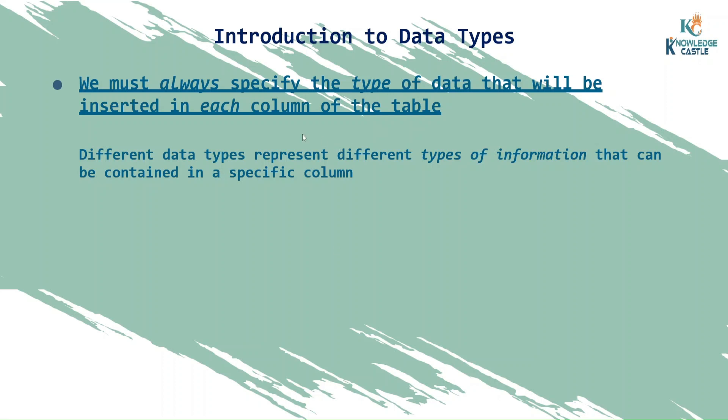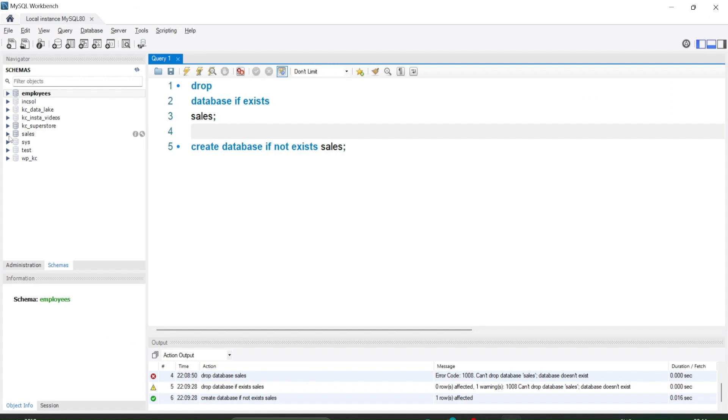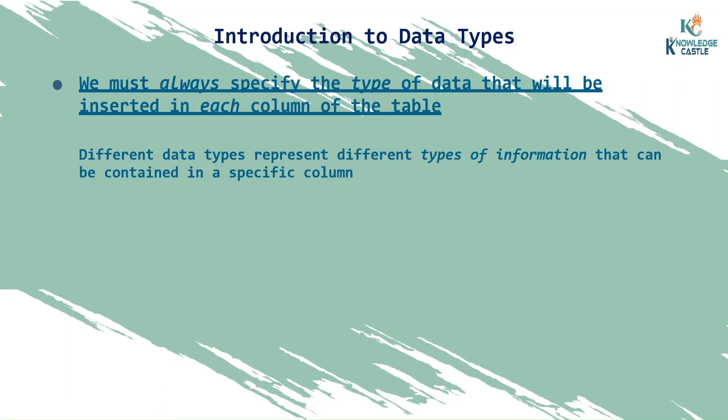If you remember, to create a table in the sales database, what is required? At least one column and a data type. To create a table, there should be at least one column and data type. That is very important. So to understand all the different types of data that we can add into the column, that is what we are going to learn.